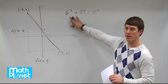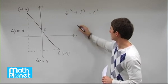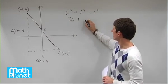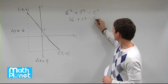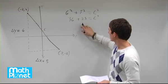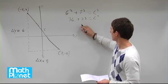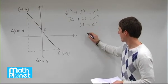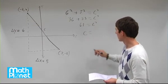We need to multiply this out and then just solve for c directly. 6 times 6 is 36. 5 times 5 is 25, equals c squared. 36 plus 25 is 30 plus 20 is 50, so 61 equals c squared.